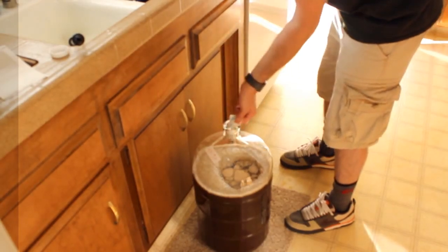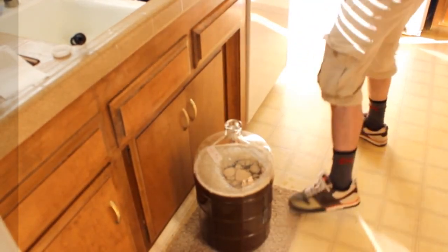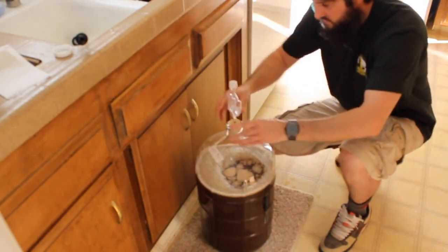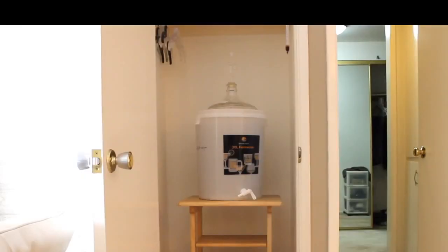Then put your carboy in a dark closet for two weeks. Write that date down. When two weeks is up, maybe set a reminder on your phone or computer. Write down your original gravity. You should see these bubbles anywhere from about 8 to 24 hours.